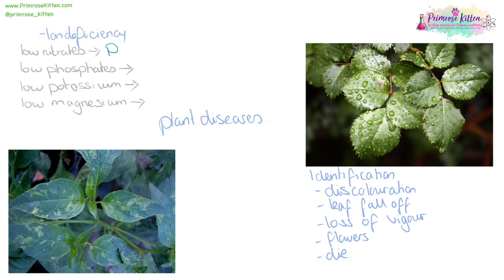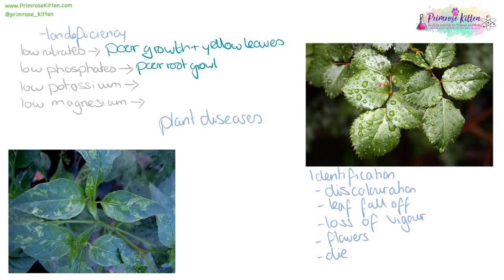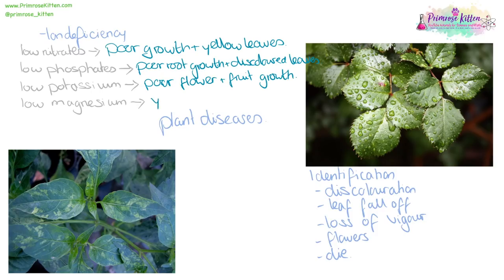If a plant has low nitrates, it is going to have poor growth plus yellow leaves. If there are low phosphates, it is going to have poor root growth plus discoloured leaves. Low potassium is going to lead to poor flower and fruit growth. And low magnesium is going to give yellow leaves. This crosses over into chemistry — this is why your NPK fertilisers are important.